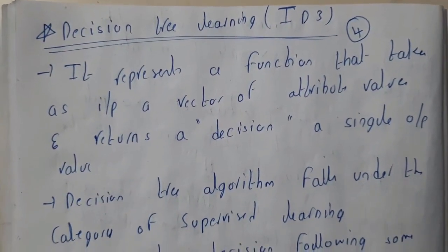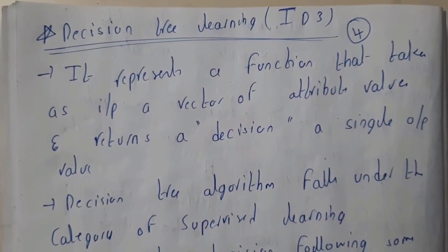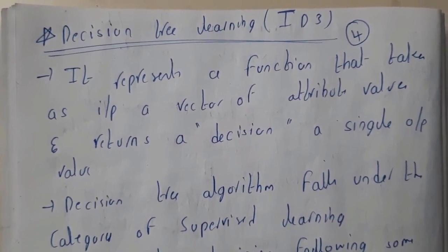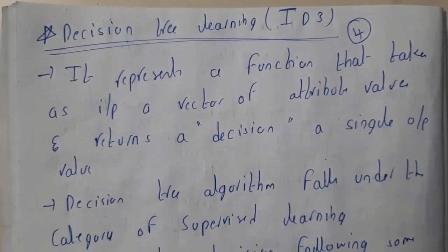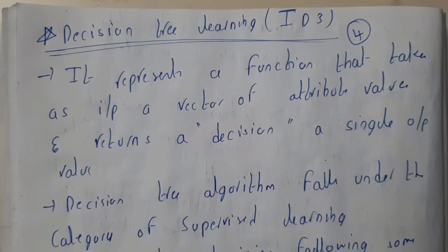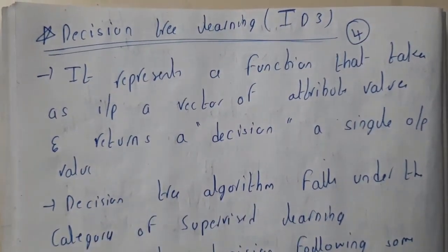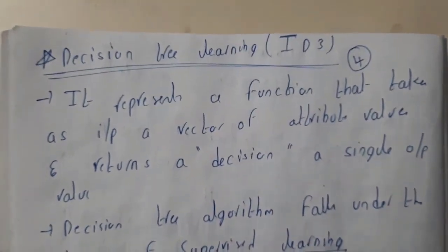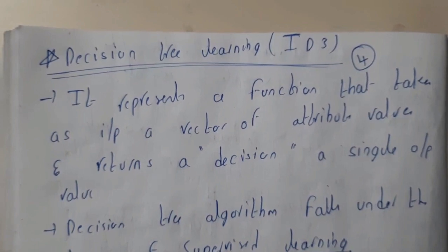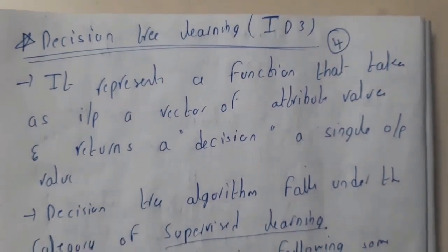So why do we need this decision tree algorithm? Basically there will be some situations in which you need to take a decision — like yes or no — with some variations. But how can a system or a robot take a decision? It will be taking decisions based on some inputs and outputs. That is the reason why this decision tree algorithm is categorized under supervised learning — please remember that.